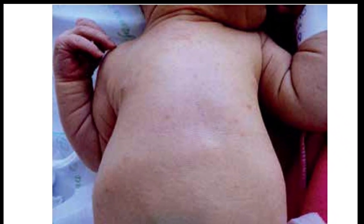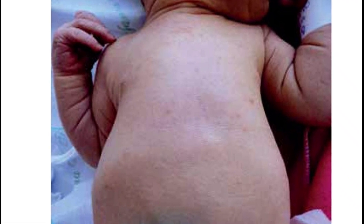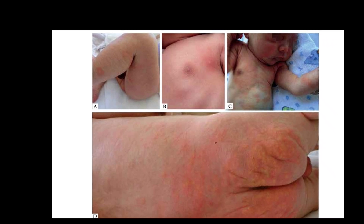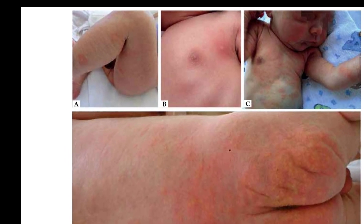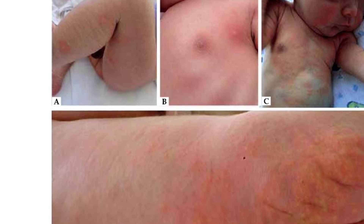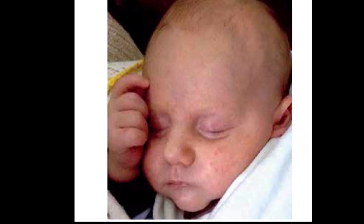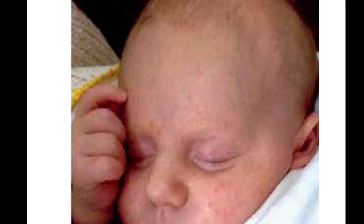Transient neonatal pustular melanosis presents in the first day of life, within the first 24 hours. Erythema toxicum neonatorum presents at the second or third day of life. Neonatal cephalic pustulosis presents in the first three weeks of life.